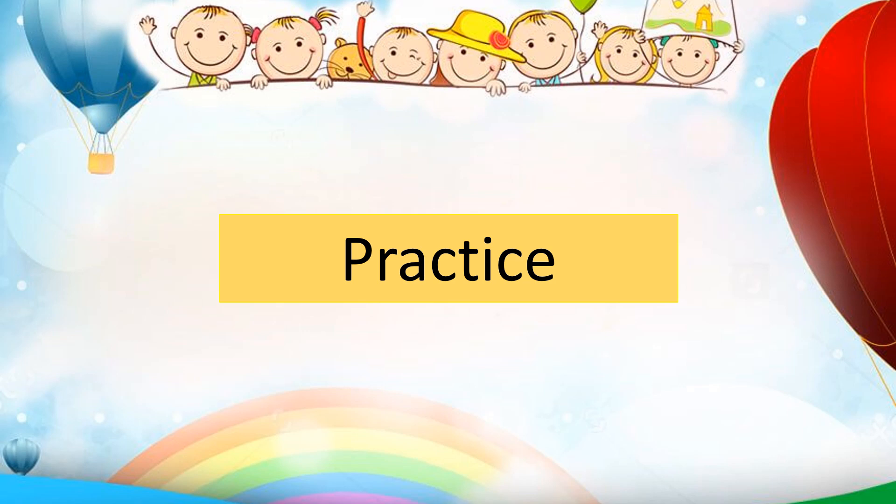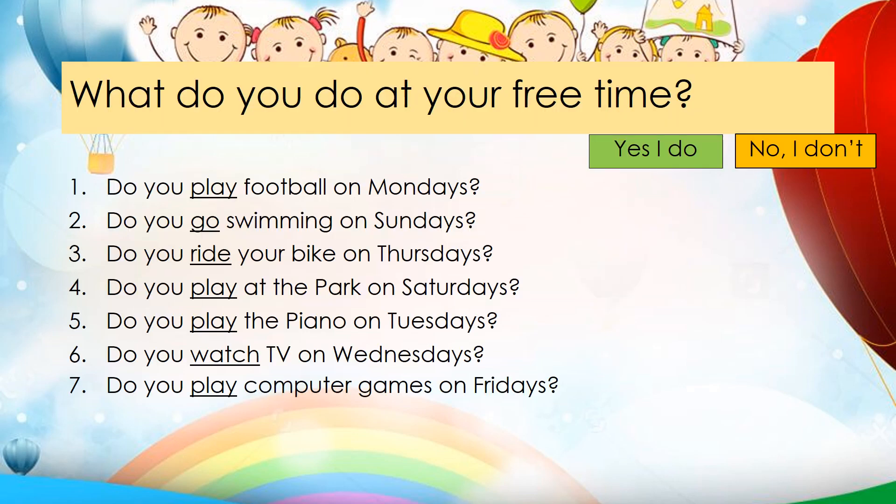Now let's practice. What do you do at your free time? There are seven sentences on this page. You will answer yes, I do, if you actually do the things I ask from every number listed, or no, I don't, if you do not do them. Yes, I do is in a green box, and no, I don't is in a light brown-orange box.